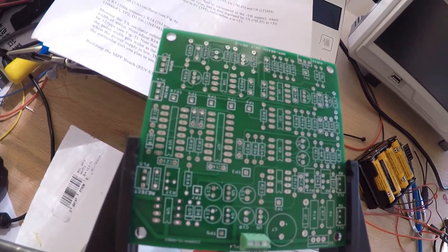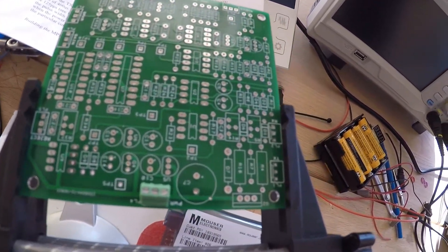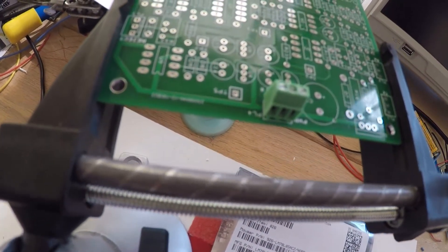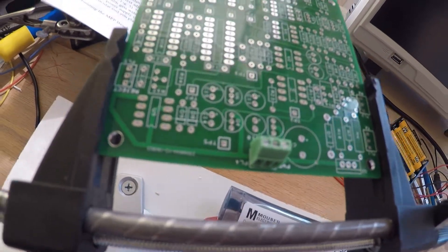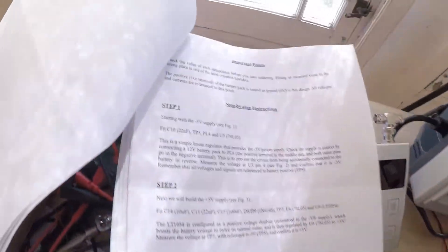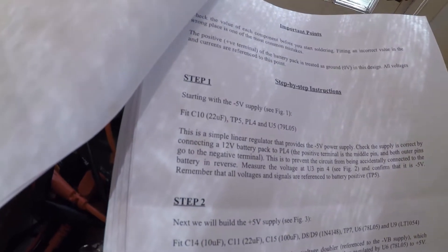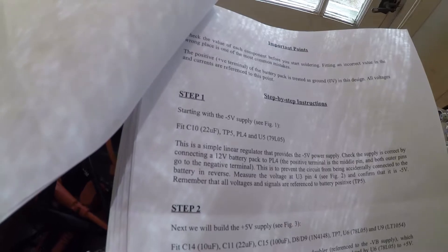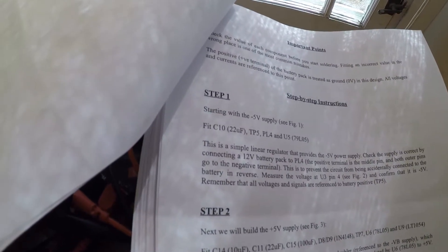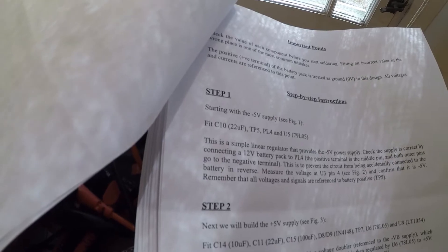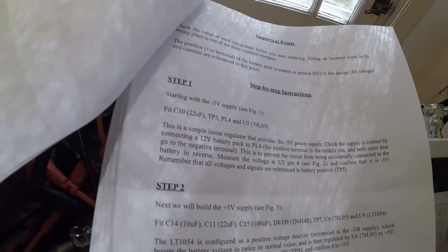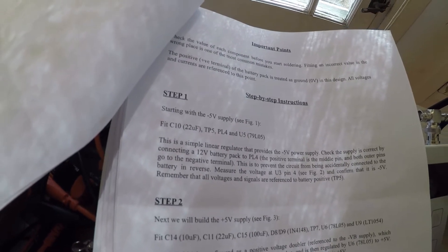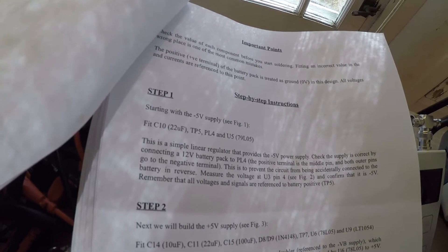Or at least I haven't soldered anything onto the board. I do have the PL4 in place and ready for soldering. First step in the build is the negative 5 volt power supply. So we have a 22 microfarad electrolytic capacitor and we have a 79L05. So I'm going to go ahead and solder these on the board.